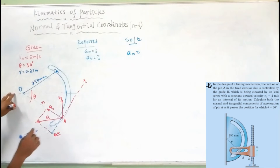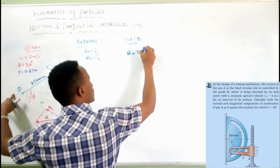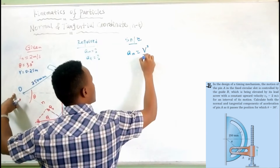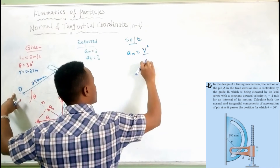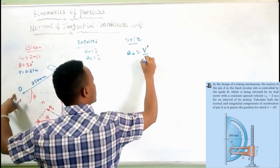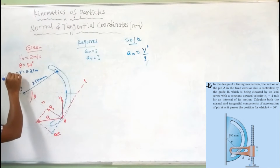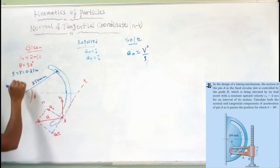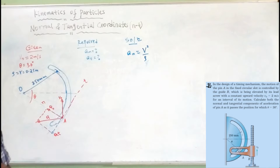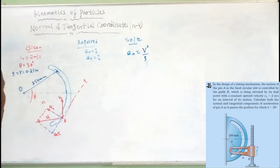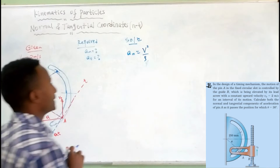Normal acceleration is known by the formula V squared over R. V squared over R, where R is the radius of curvature, or radius of rotation.